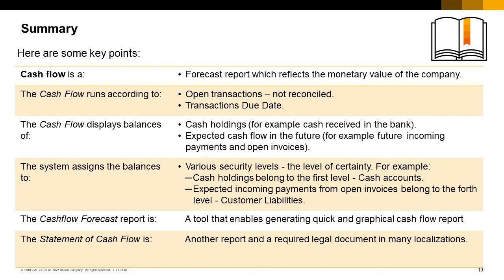The system assigns the balances to various security levels based on the level of certainty. For example, cash holdings belong to the first level — cash accounts — while expected incoming payments from open invoices belong to the fourth level, customer liabilities.